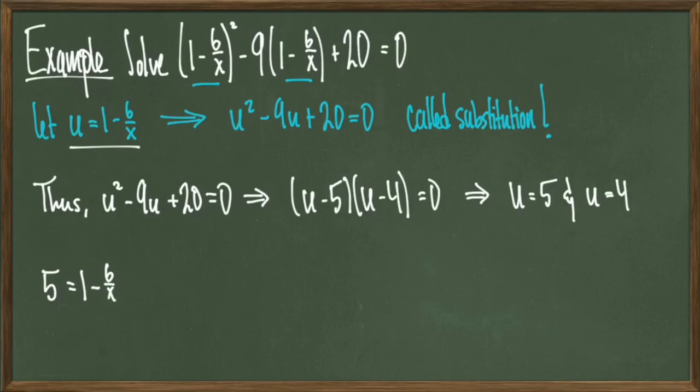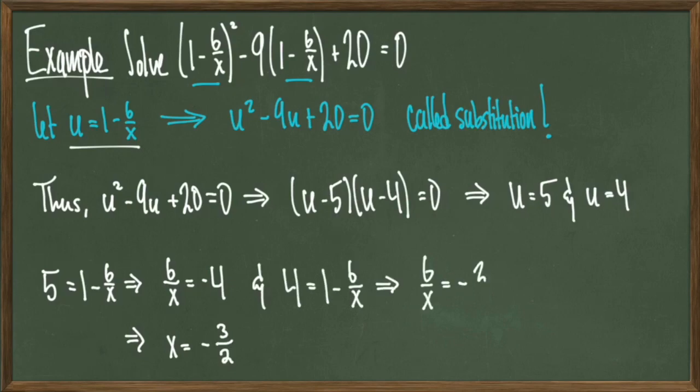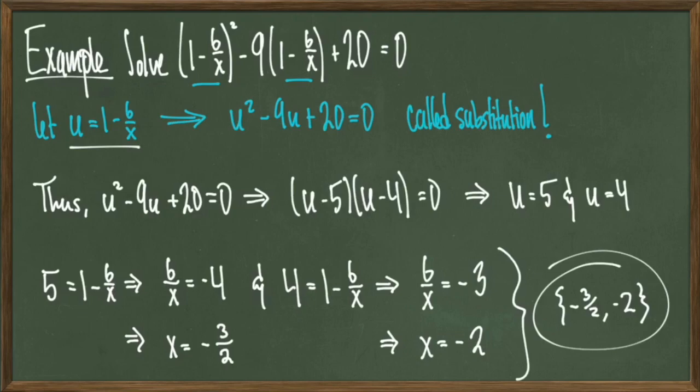I'll first set 5 equal to 1 minus 6 over x, and I notice that as I solve for x, I end up with an answer of x equals negative 3 halves. If I do this with 4, I set 4 equal to 1 minus 6 over x, and when I solve for x, I get that x is equal to negative 2. Therefore my solution set is negative 3 halves and negative 2, and we're done.